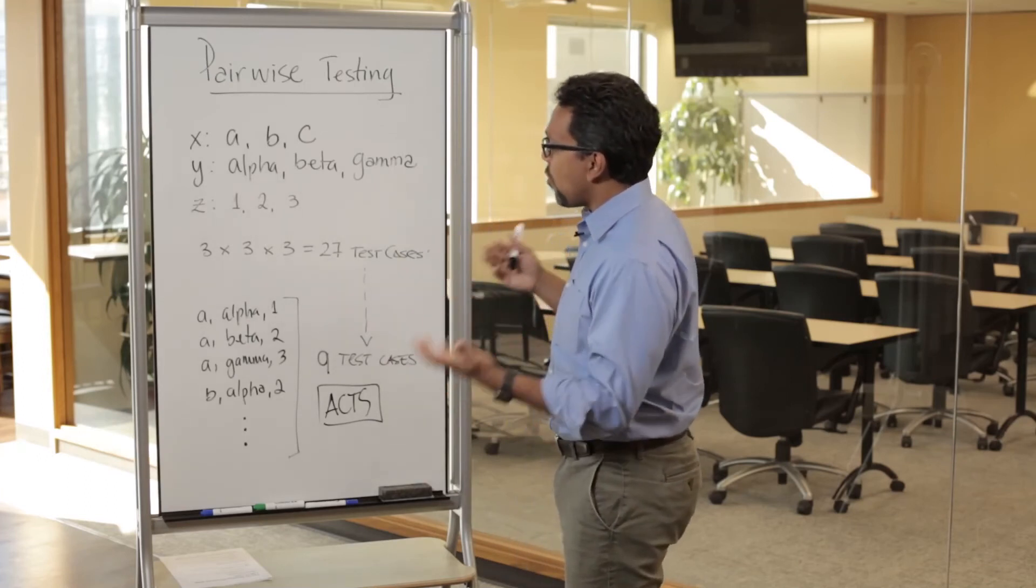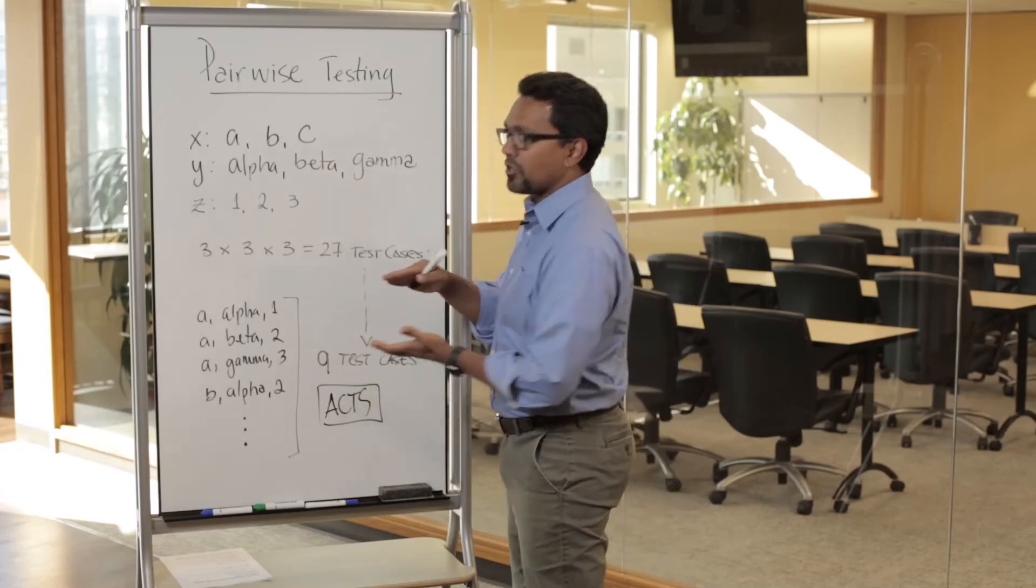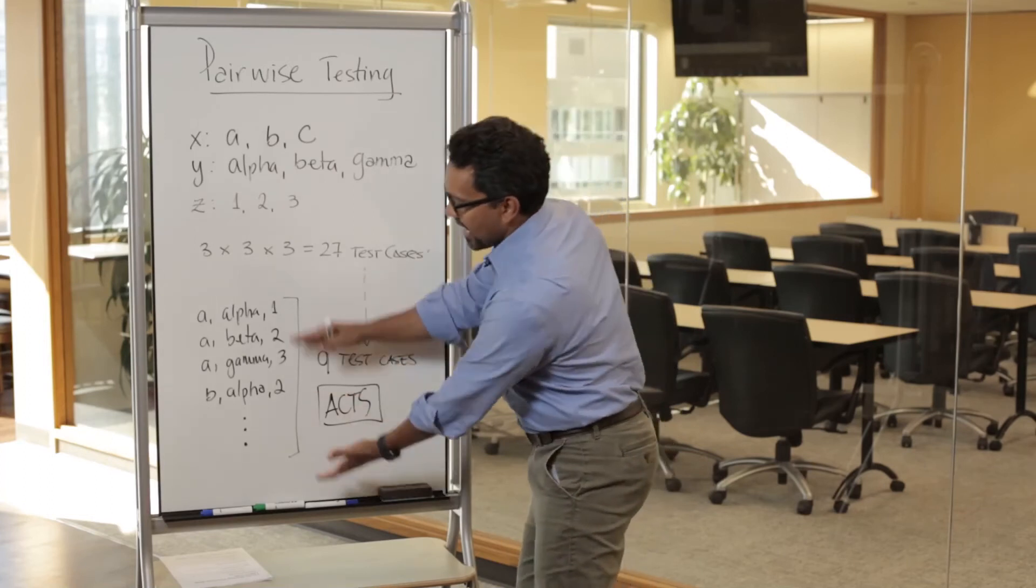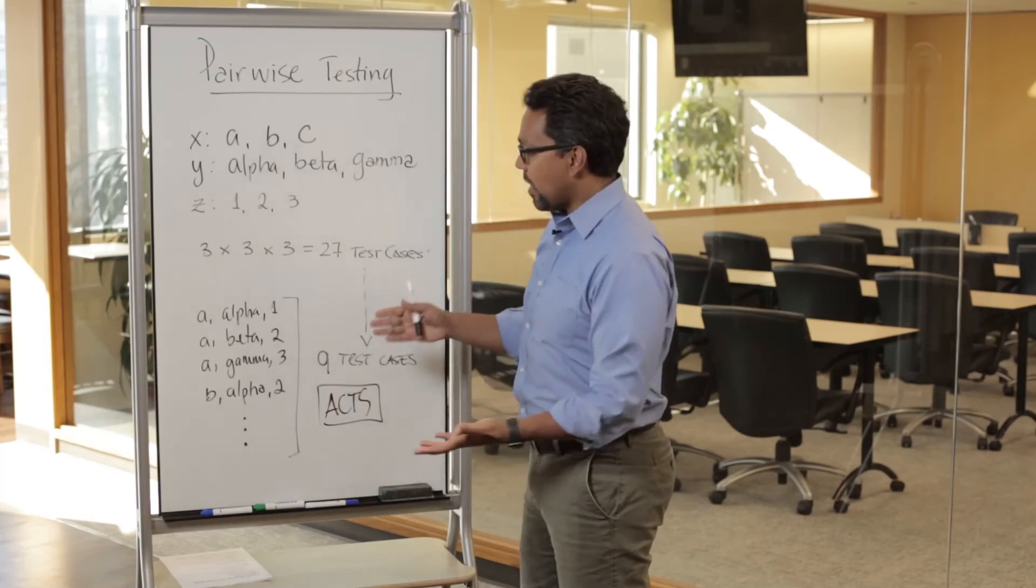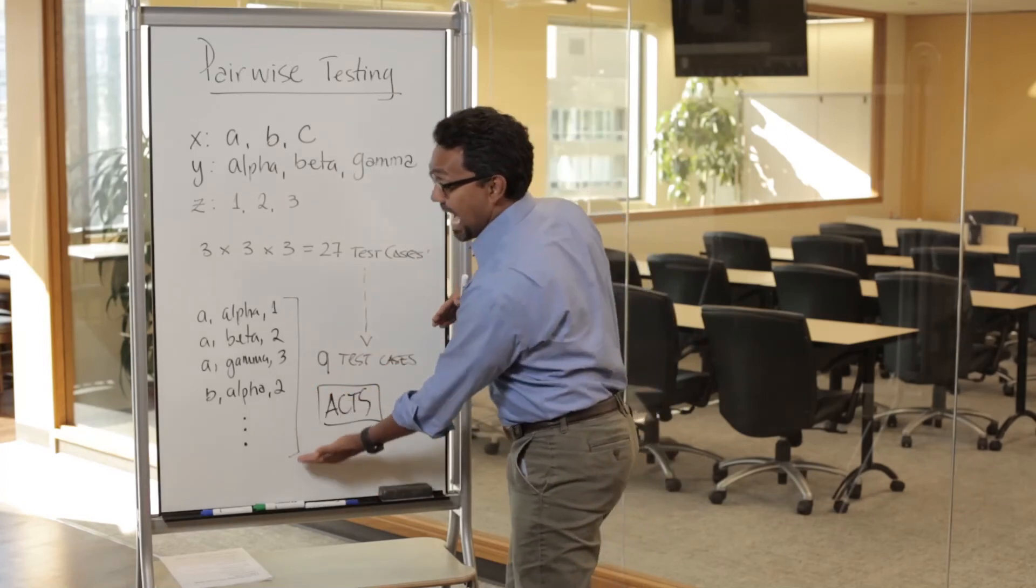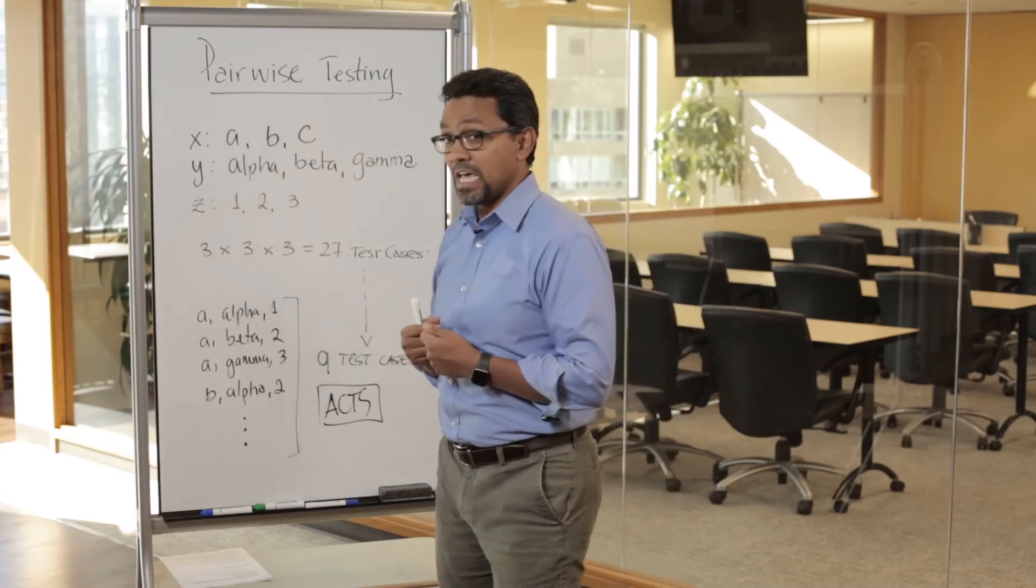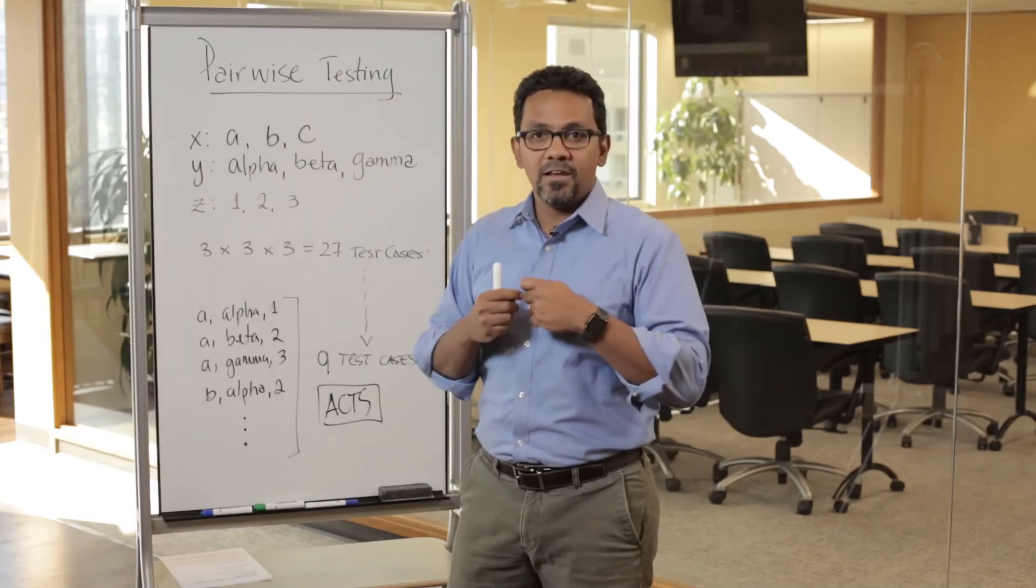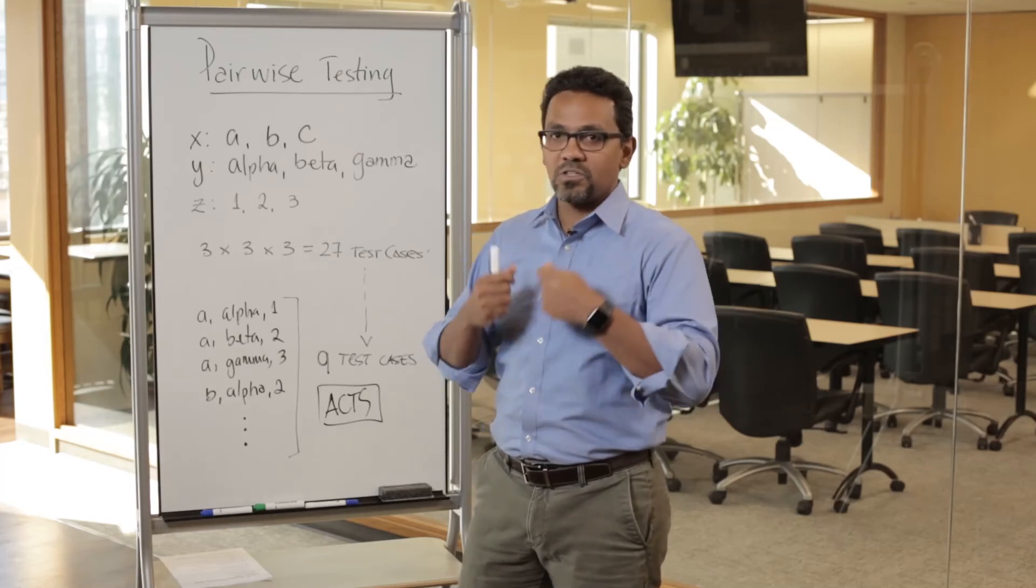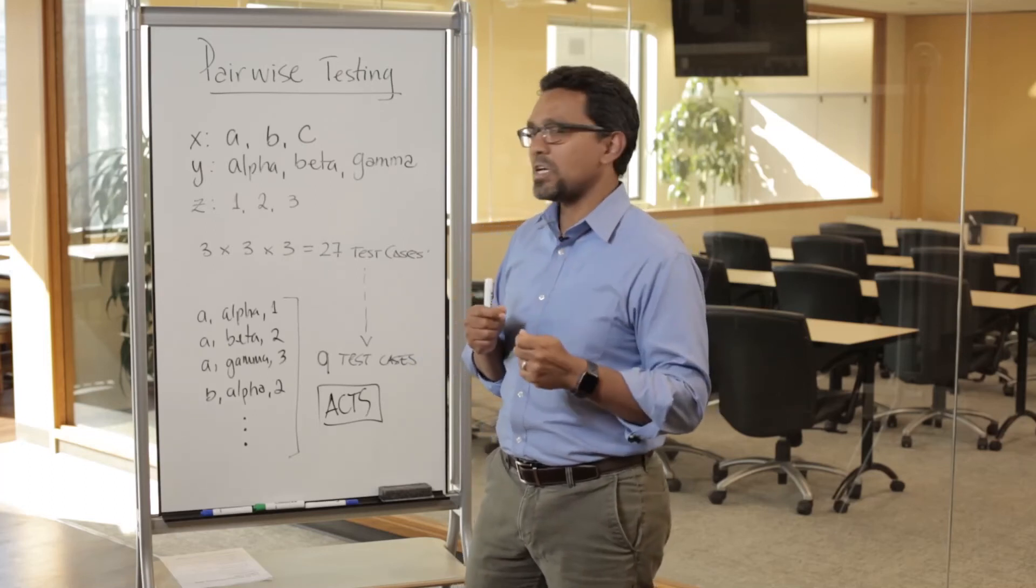One thing that some people will say: what if you like to test a particular triplet that is not being considered? One thing that you can do is basically add those specific triplets that you like to test. Like it could be a specific configuration you know is going to be very common, and you like to make sure that test is being considered.